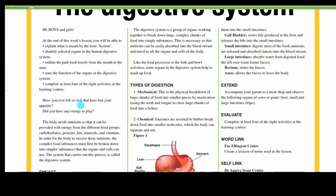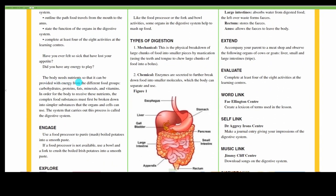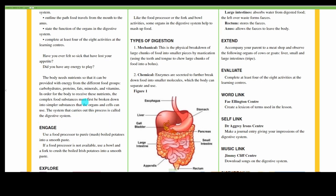Have you ever felt sick that you have lost your appetite? Did you have any energy to play? The body needs nutrients so that it can be provided with energy from the different food groups: carbohydrates, proteins, fats, minerals, and vitamins. In order for the body to receive these nutrients, the complex food substances must first be broken down into simple substances that the organs and cells can use. The system that carries out this process is called the digestive system.